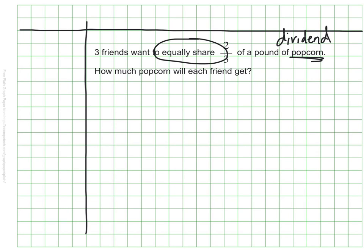We will be dividing it into three equal parts, so we want to mark that that will be our divisor. Our number sentence will be that we are taking two-thirds and dividing it by three, and that's what we'll need to do to find our quotient.